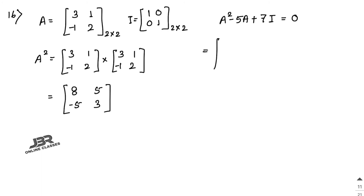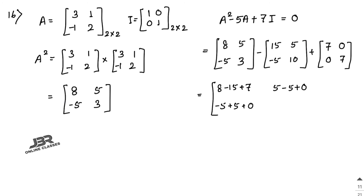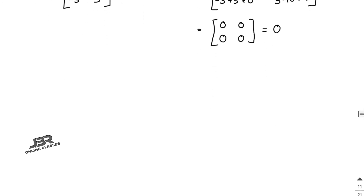Now compute: A² − 5A + 7I = [8,5;−5,3] − [15,5;−5,10] + [7,0;0,7]. Element-wise: 8−15+7=0, 5−5+0=0, −5+5+0=0, 3−10+7=0. The result is the zero matrix — it is proved. Sum 17 is similar to sum 16.